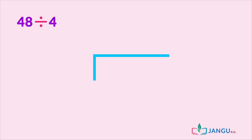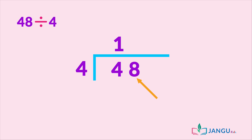48 divided by 4. Using the same steps, we check if the first digit can be divided by 4. It can. So we divide 4 by 4, which gives us 1. We write it on top. We do the same for the second number — 8 divided by 4 will give us 2. We write down 2. This gives us an answer of 12. 48 divided by 4 equals 12.